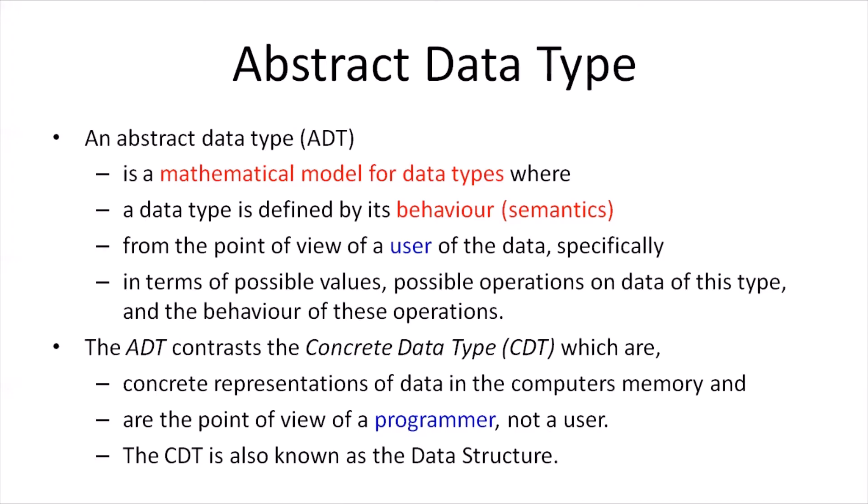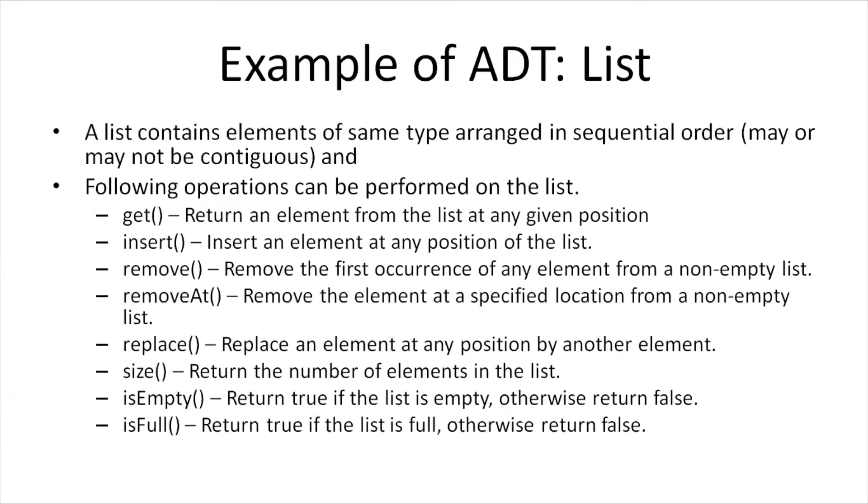In contrast to the ADT, we have the concrete data type or CDT. The CDT is concerned about representing the data in the computer's memory and is developed from the perspective of a programmer. The CDT is what we also call the data structure. When we talk of an abstract data type, we are not concerned about how it is implemented in memory — only about what type of data it can hold and what operations can be performed on it. The first example of an ADT is the List, which contains elements arranged in a sequential order that may or may not be contiguous.